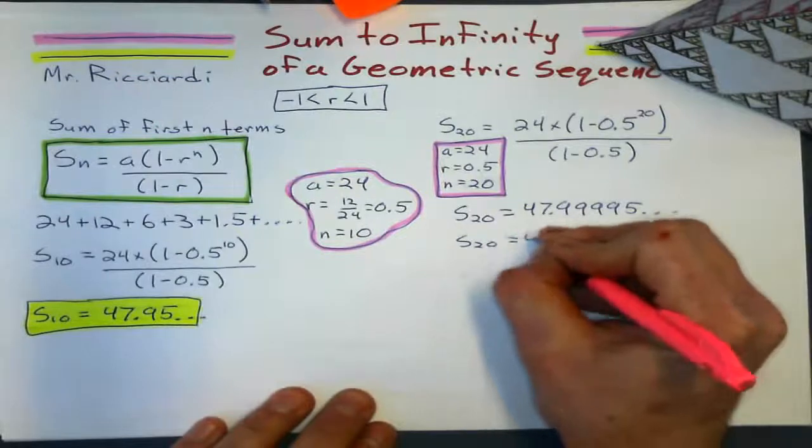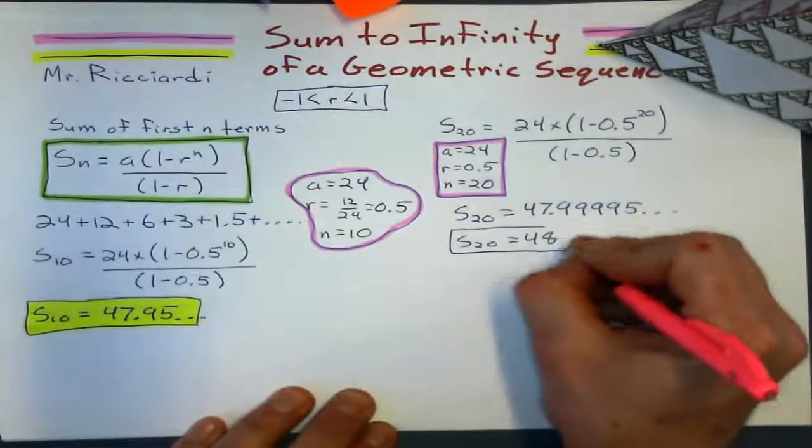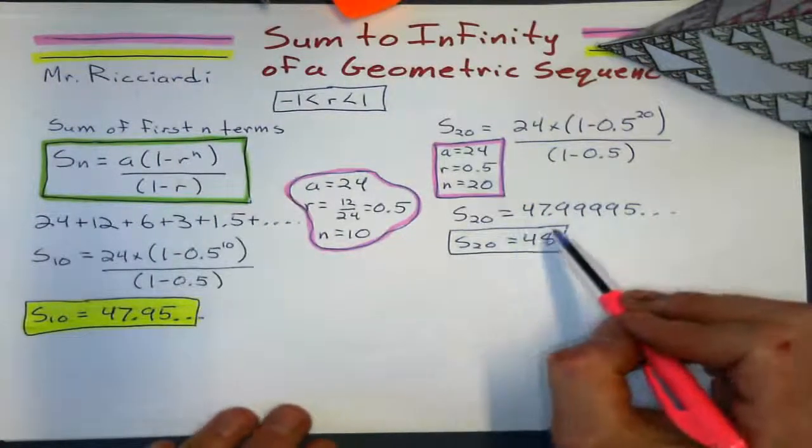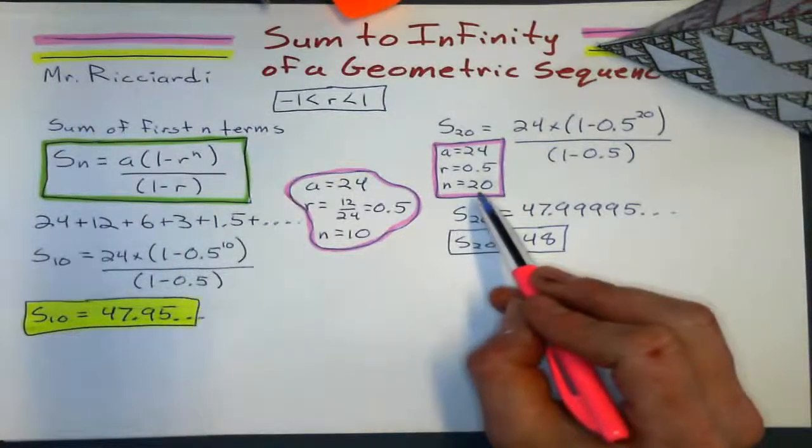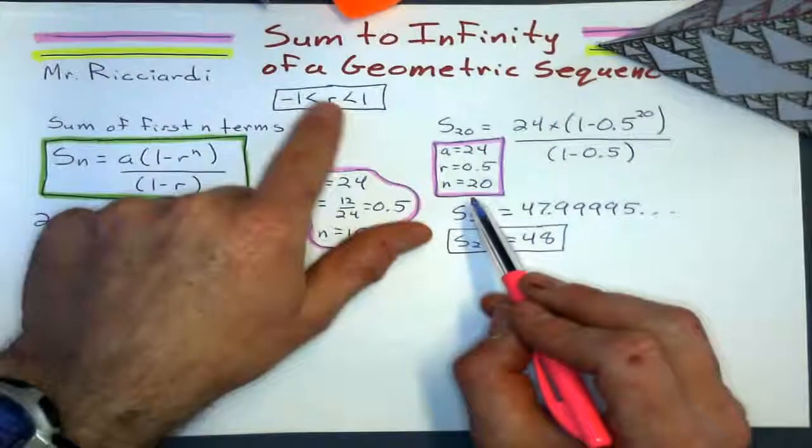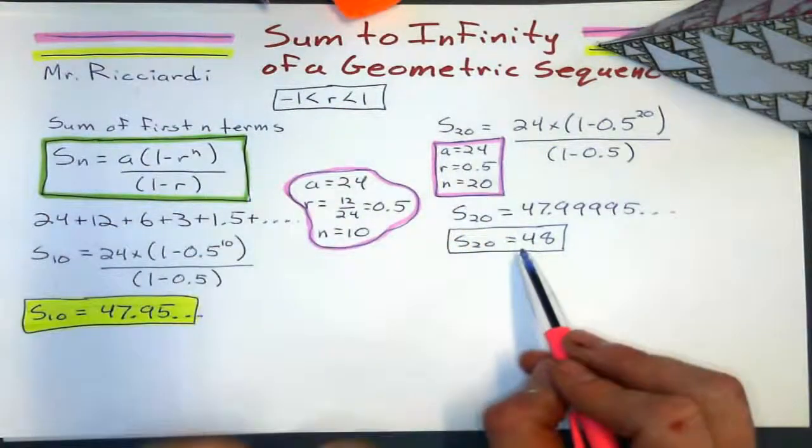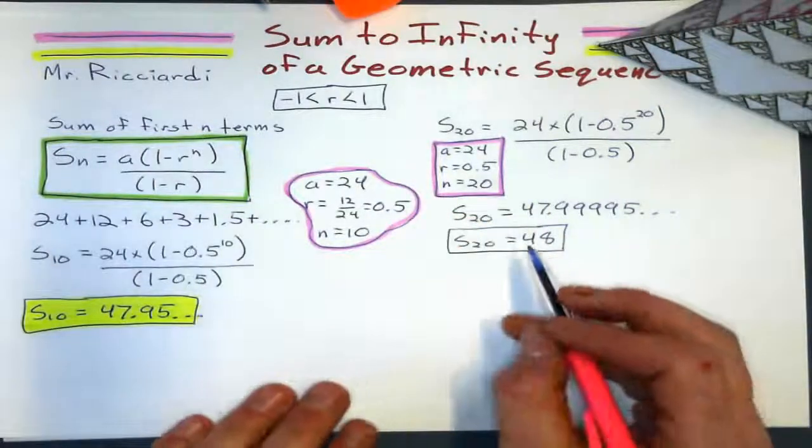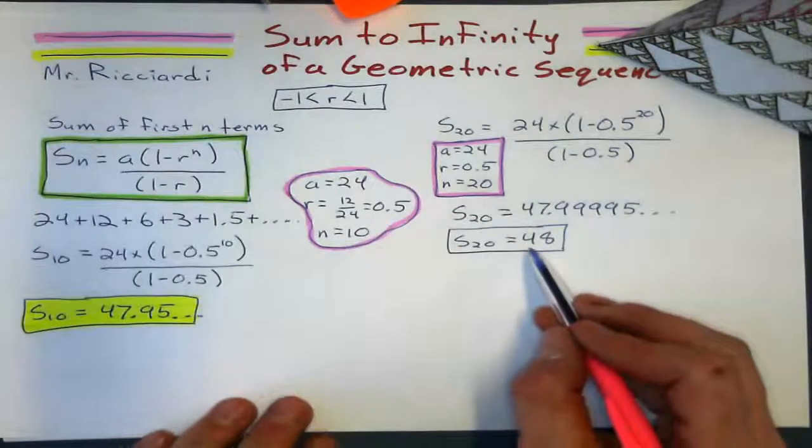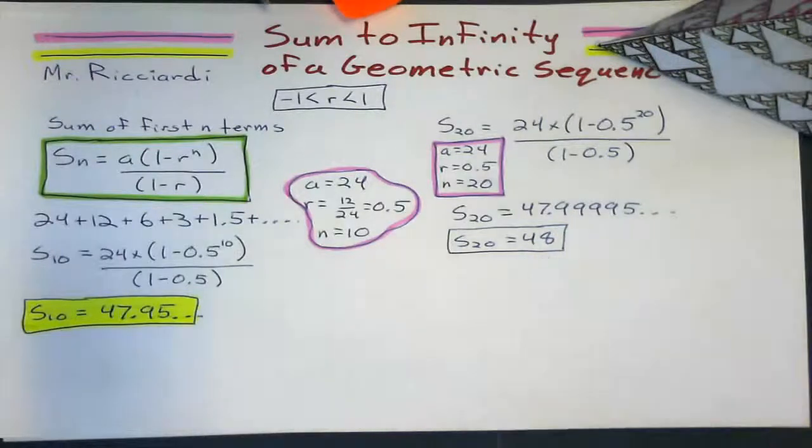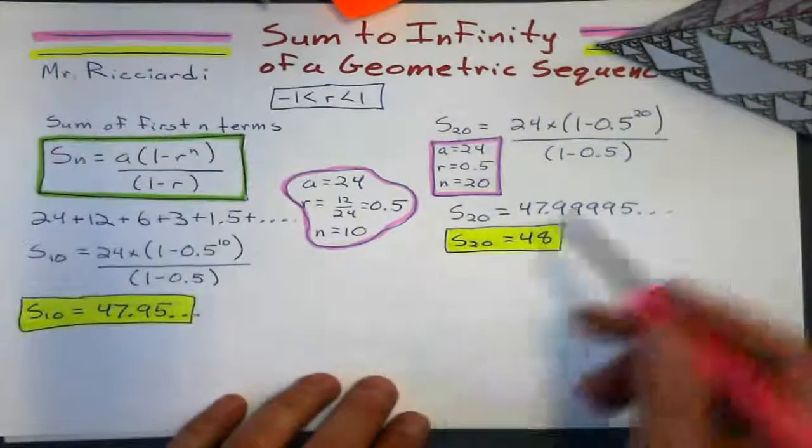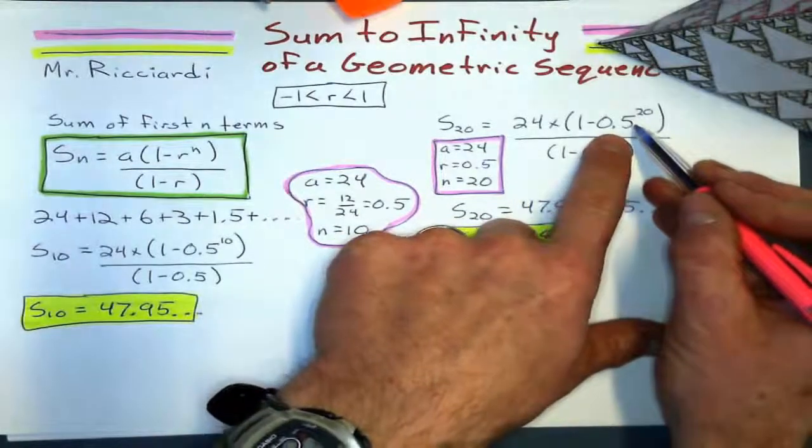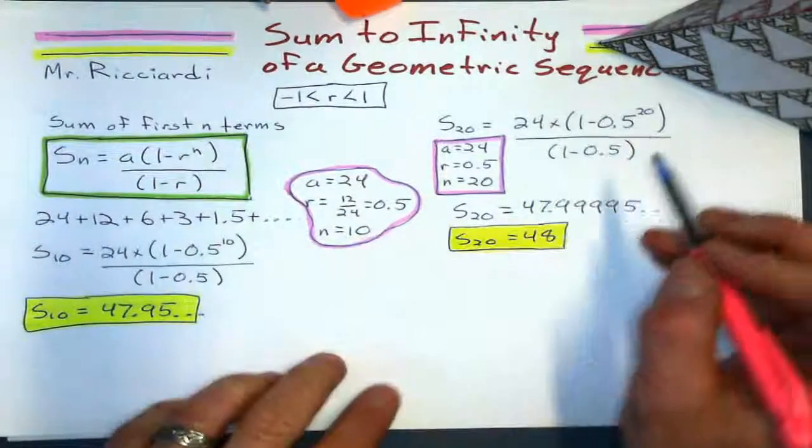So what happens is that when I find the sum of a geometric sequence here and I increase N, as N gets bigger, and this is if the ratio is between these two guys, it's going to come to a certain value. It's going to add up to one number instead of just something like infinity or something. And why is that? Let's see. It all has to do with this here. It all has to do with this guy right there.